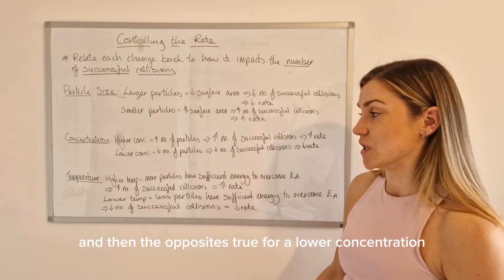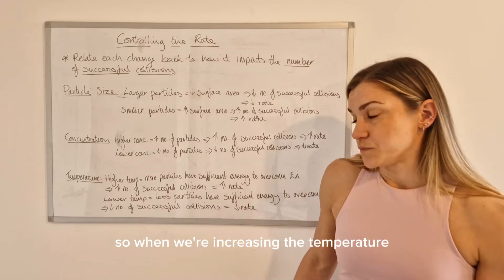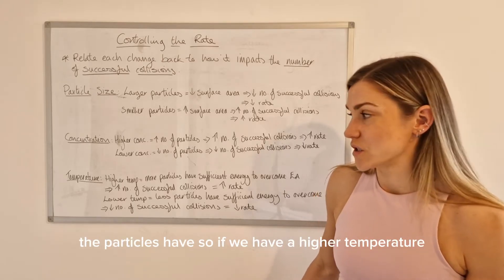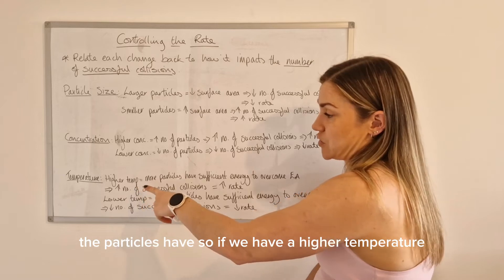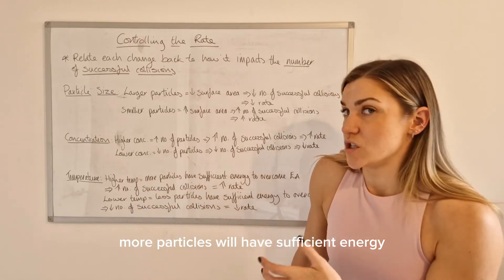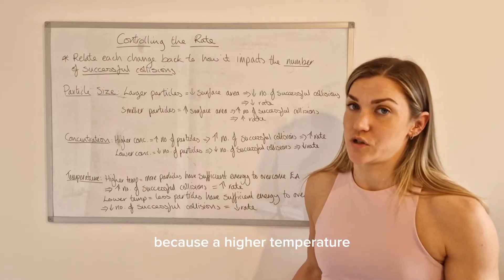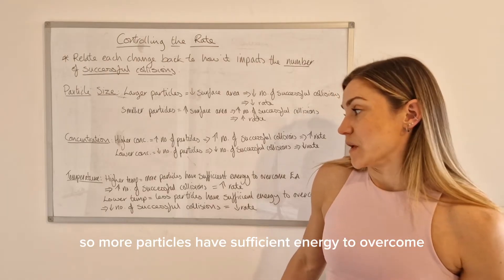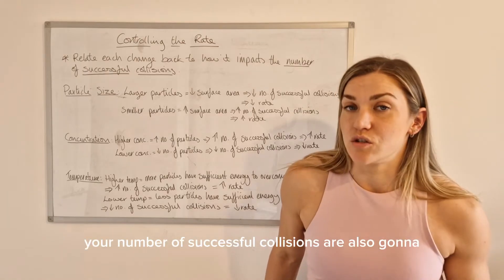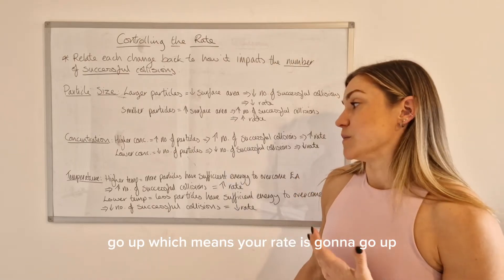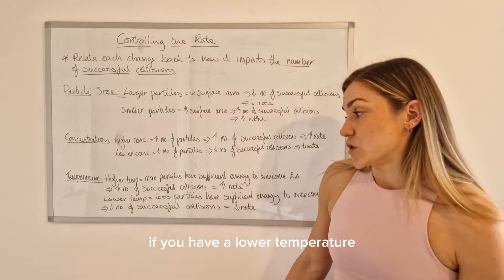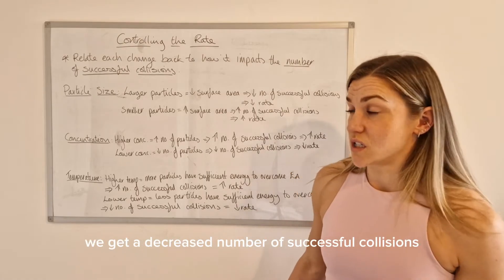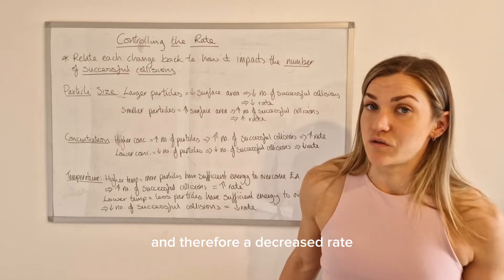Temperature is a bit different. When we increase or decrease the temperature, we're changing the amount of energy the particles have. A higher temperature gives particles more kinetic energy, so more particles will have sufficient energy to overcome the activation energy. That means the number of successful collisions goes up, so the rate goes up. With a lower temperature, fewer particles have sufficient energy to overcome the activation energy, giving a decreased number of successful collisions and therefore a decreased rate.